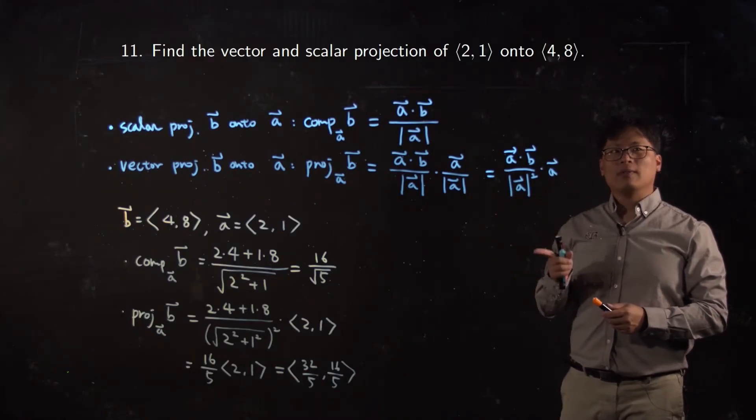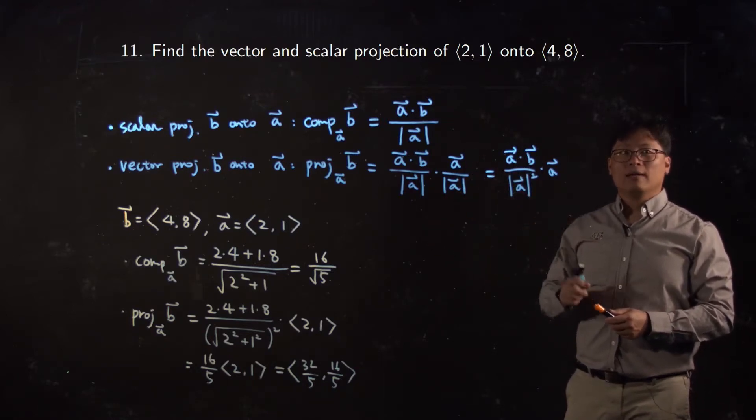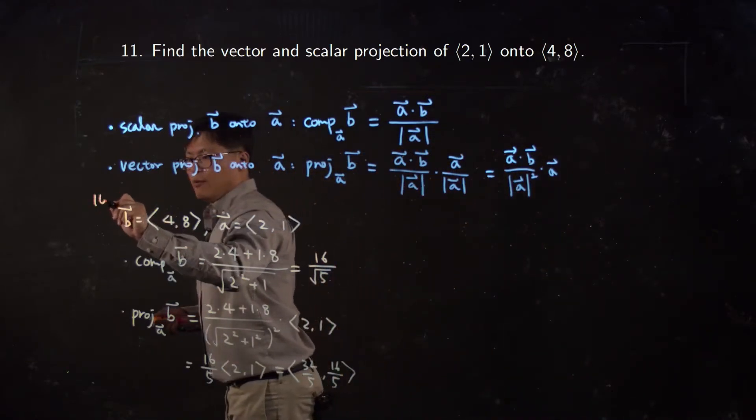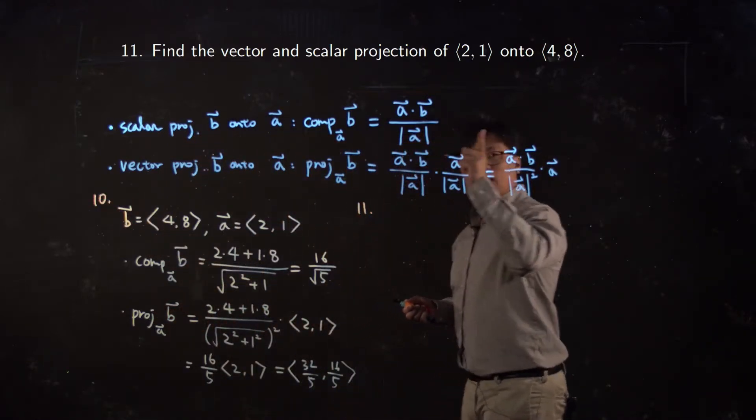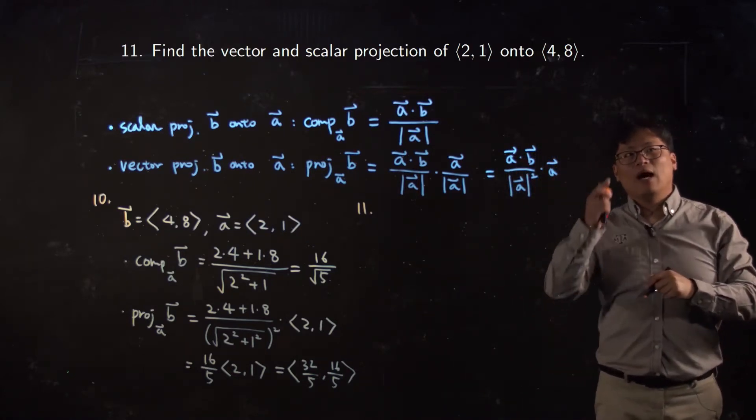Okay, let's keep talking about number 11. It is continued from number 10, but I would explain why. First of all, this was number 10, right? And this is number 11. But number 11, I'm using the same vector but the direction is different. And now 2 comma 1 is projected onto 4 comma 8.